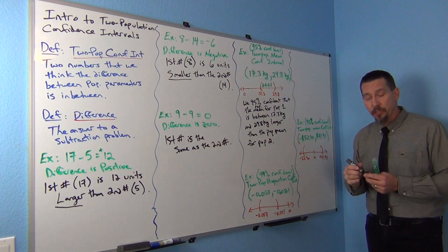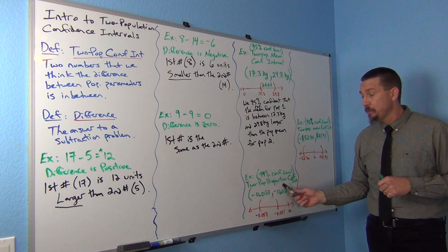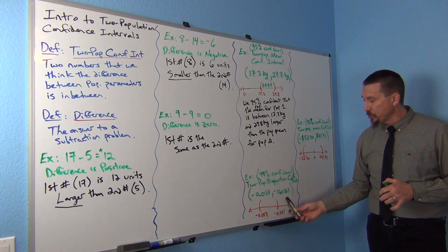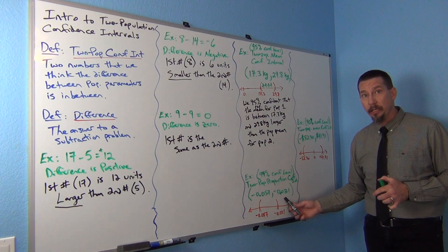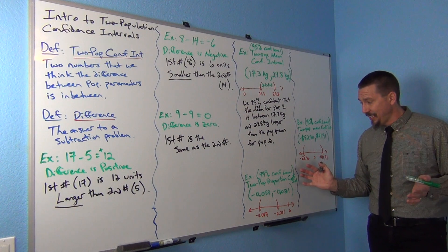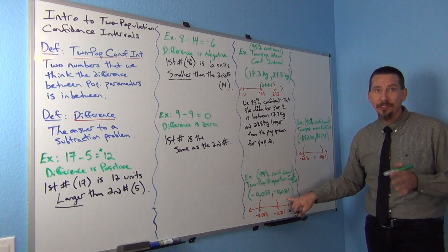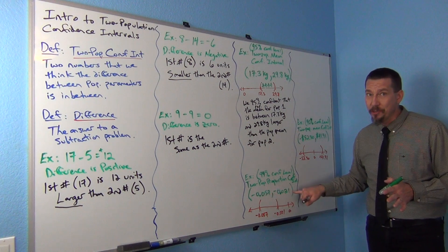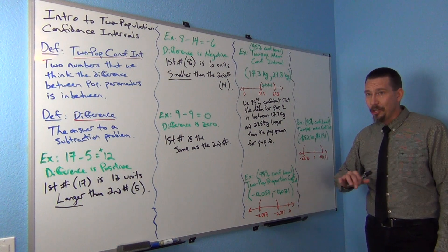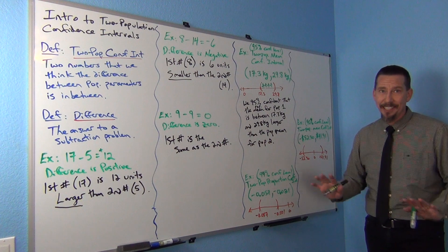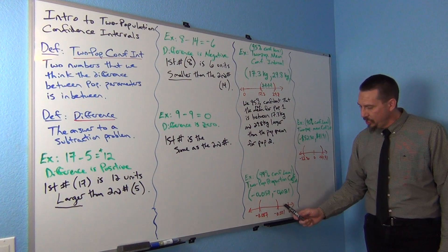Now let's look at another one. This time we have a 99% confidence level, two population proportion confidence interval — we're talking proportions, the decimal equivalent of percentages. Notice how both numbers came out negative this time: negative 0.057 and negative 0.021. Don't think of 0.057 as population one and 0.021 as population two — that's not how this works. This is millions of numbers in between, and the difference could be any of them. The key is that the millions of numbers in between on the number line are all negative.